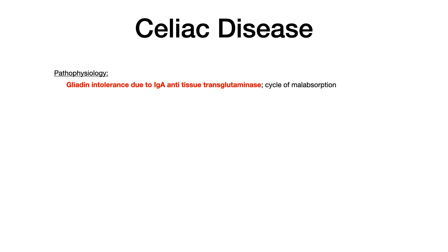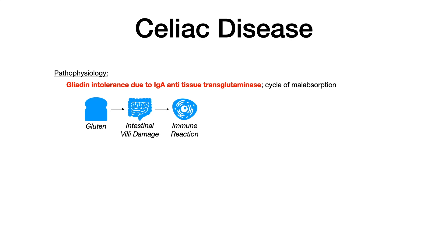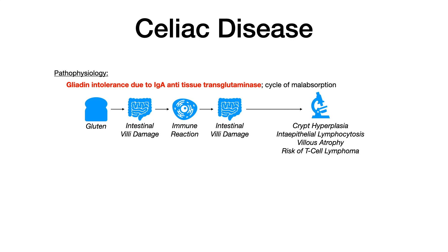Pathophysiology: there's gliadin intolerance — gliadin is basically a gluten component — due to IgA anti-tissue transglutaminase, and this causes a perpetuating cycle of malabsorption. Gliadin, a derivative of gluten, causes intestinal villi damage. The person is intolerant to gluten, that damages the intestinal villi, and once damaged, there is an immune reaction. However, the immune reaction causes more intestinal villi damage — inflammation causes more inflammation. Over time, this leads to pathological changes including crypt hyperplasia, intraepithelial lymphocytosis, and villus atrophy, which collectively increase the risk for T-cell lymphoma.